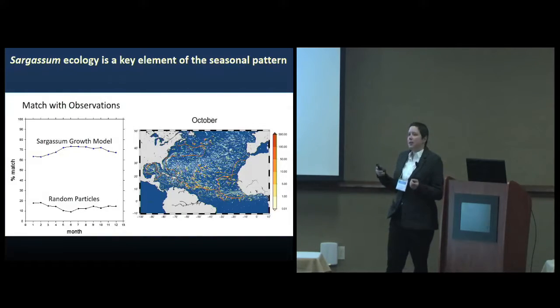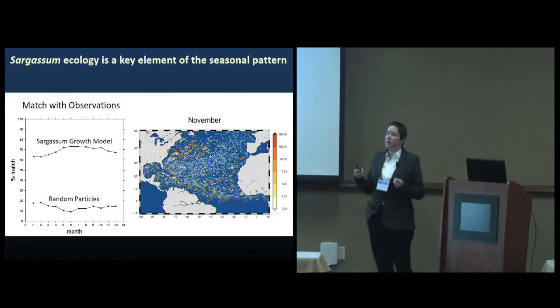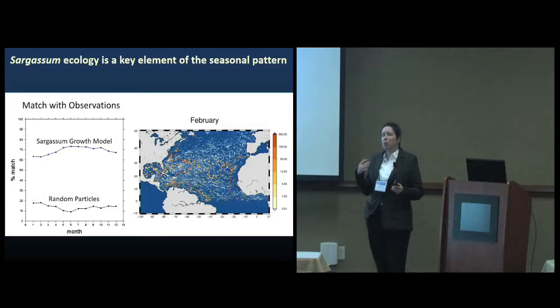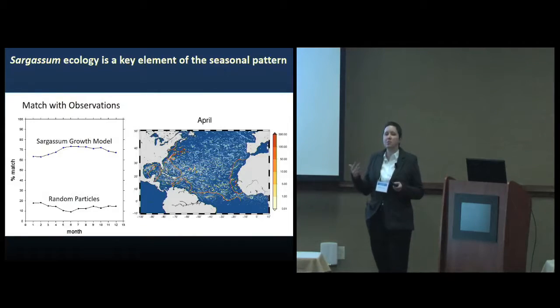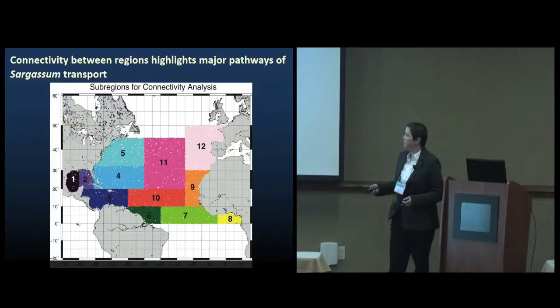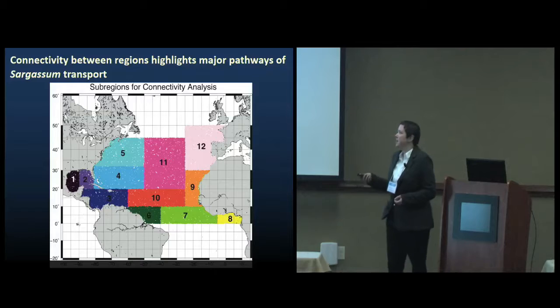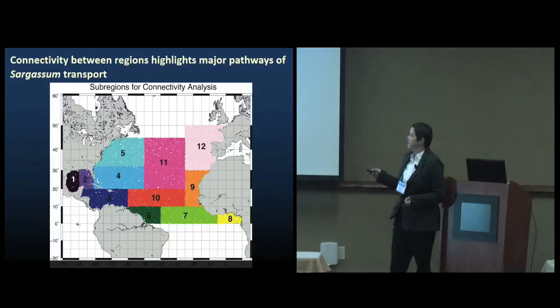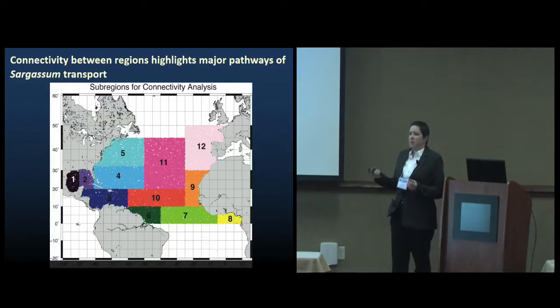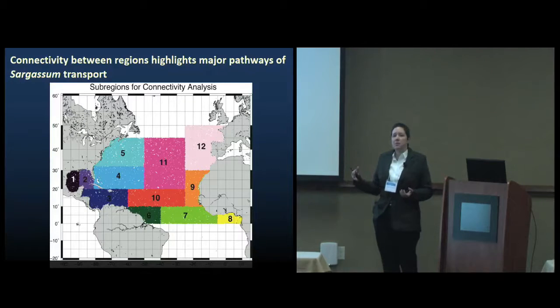Now that I have a model that seems to be capturing what's going on, I want to start zooming in and thinking about regions in this domain where sargassum might be more important, or regions that might have a disproportionate influence on the overall distribution of sargassum. To try to tackle this, I did a connectivity analysis. What I've done here is I just subdivided my domain into these 12 regions. They're chosen based either on the oceanographic properties of the circulation there or because they're particularly important or interesting in the sargassum distribution.